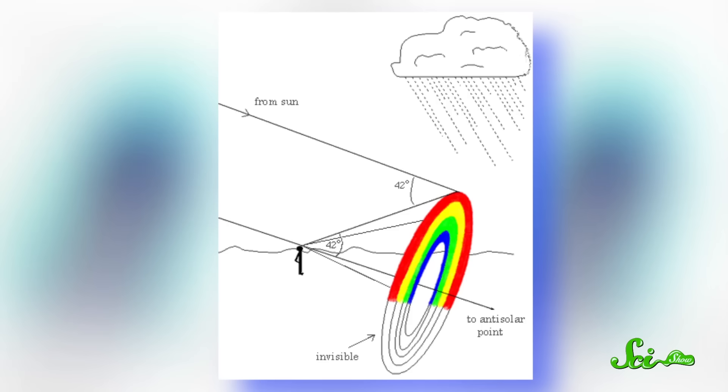So, what creates the bow of the rainbow? Well, actually, rainbows form in a full circle in front of you at an angle of 40 to 42 degrees from your line of vision. This means you'll always be at the center of any rainbow you see, which is kind of a nice thought. But it also means that the earth is going to block the lower half of the rainbow, so you typically only see the upper arc.